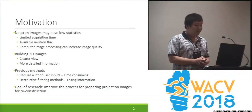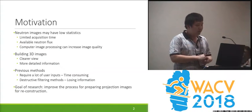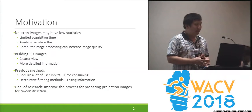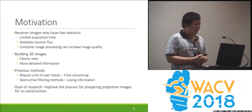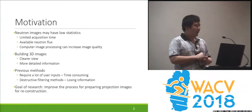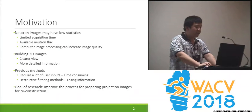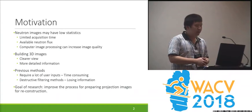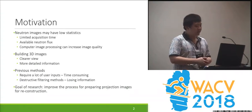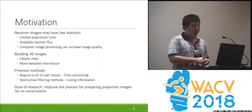Neutron images may have low statistics because of the limitation of acquisition time and available neutron flux. Computer vision and computer image processing techniques can increase image quality, and building a 3D model from 2D images may provide us a clear view and give us more detailed information. Our previous existing work either requires a lot of user input, which is pretty time-consuming, or they use destructive filtering methods, which may cause information loss.